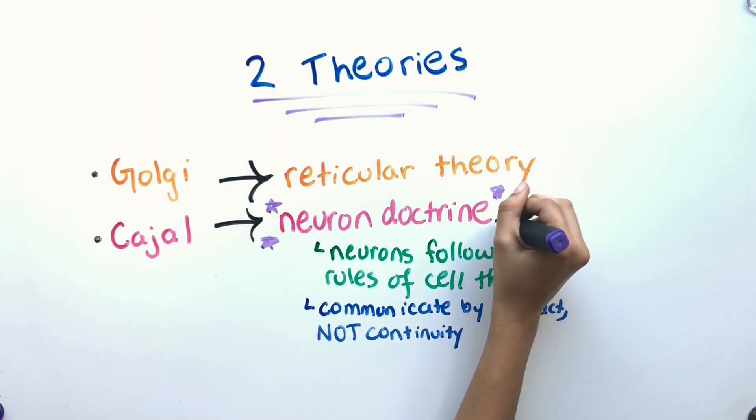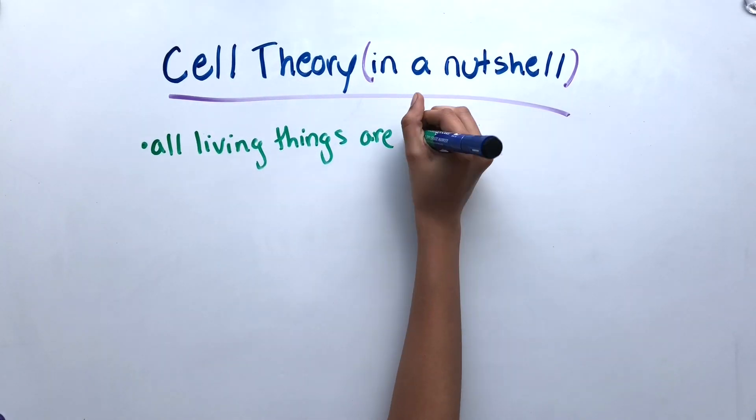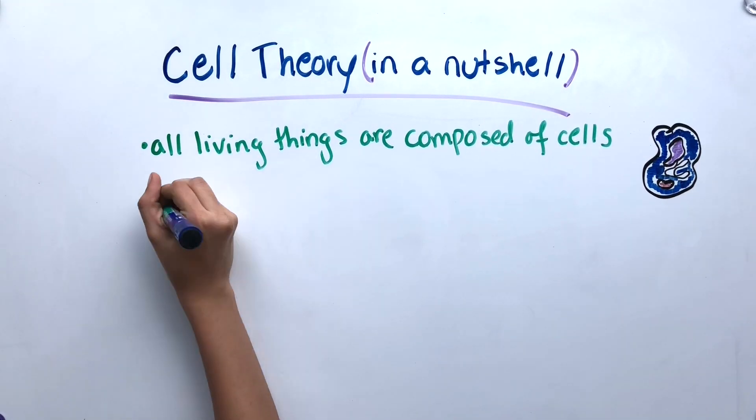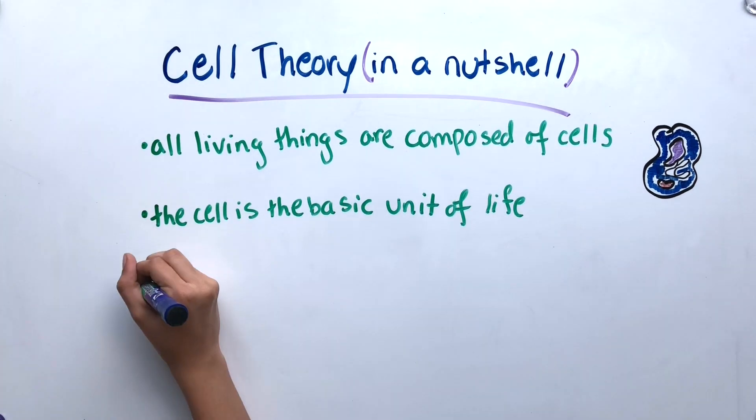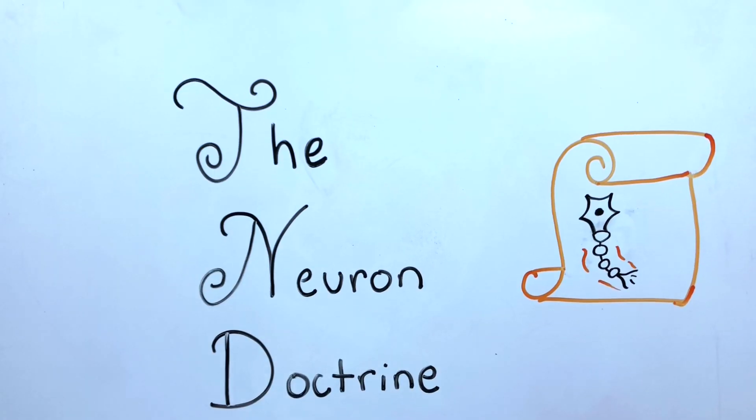This idea could be related to cell theory, which states that all living things are composed of one or more cells, the cell is the basic unit of life, and new cells arise from existing cells. This concept that cell theory also applies to neurons is known as the neuron doctrine.